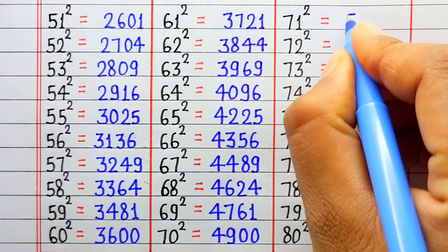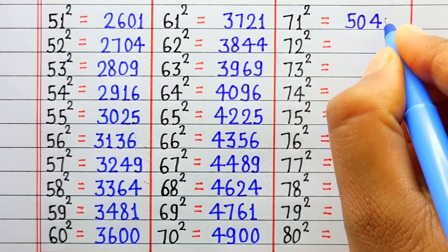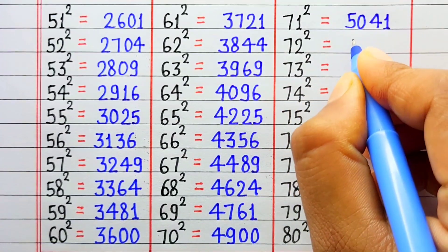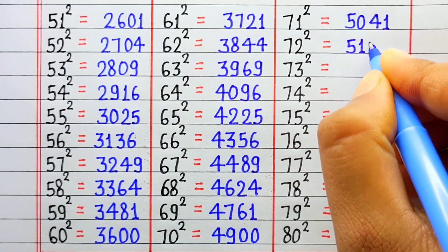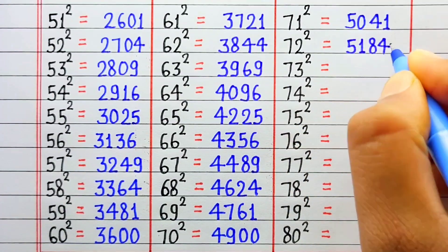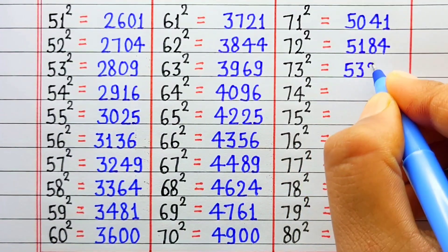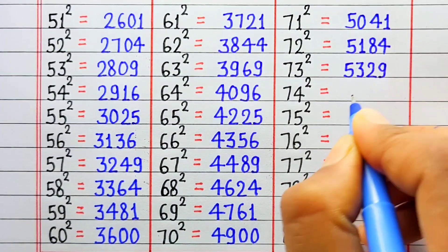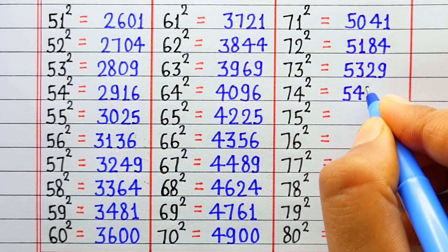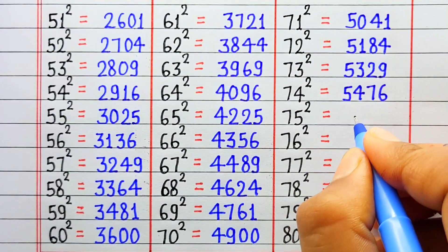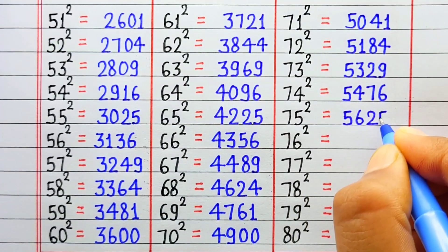Square of 71 is 5041. Square of 72 is 5184. Square of 73 is 5329. Square of 74 is 5476. Square of 75 is 5625.